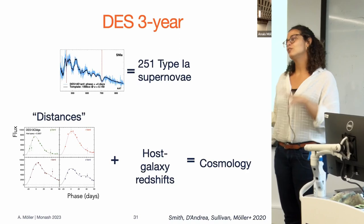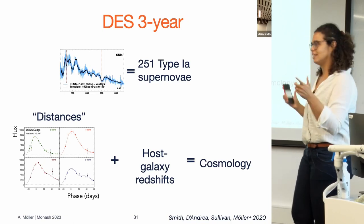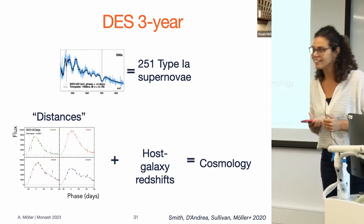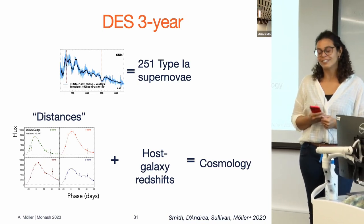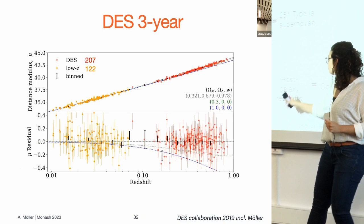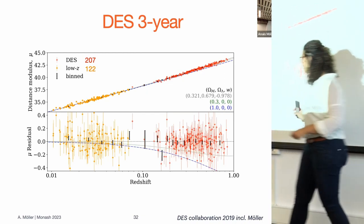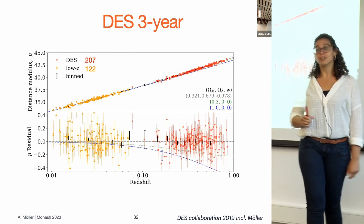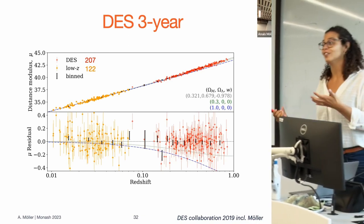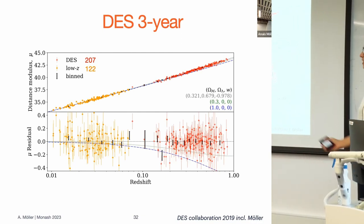We take distances using the light curves, redshifts from the host galaxies, and do cosmology. We can make a Hubble diagram — distance against redshift for all the Type Ia supernovae — and this tells us whether the universe is expanding in an accelerated fashion. We compare it to a cosmological model; we are still Lambda CDM, nothing has changed. But what can we do better for the five-year analysis?